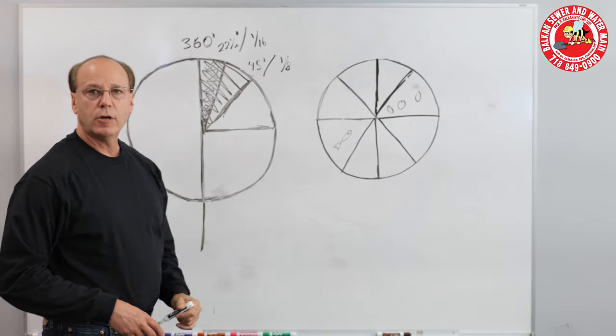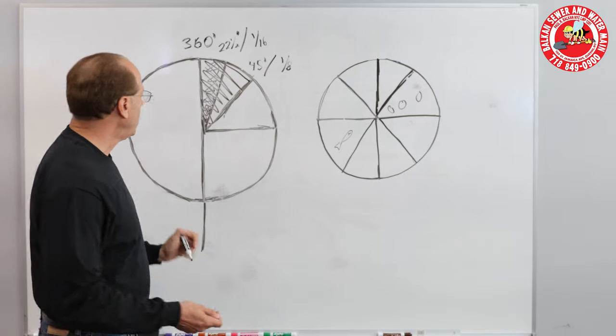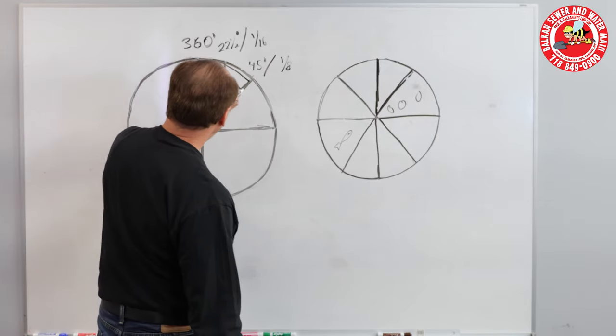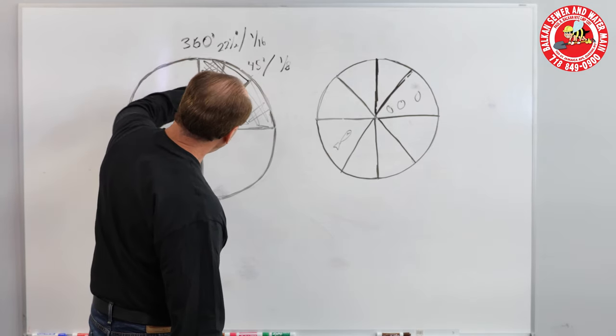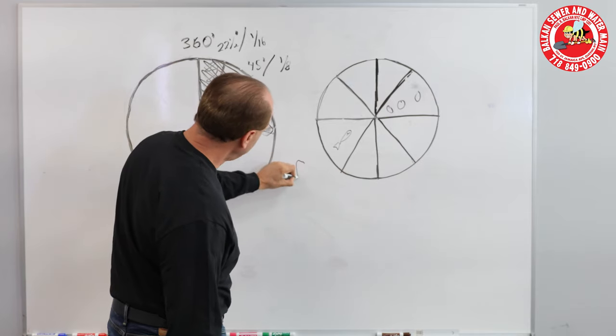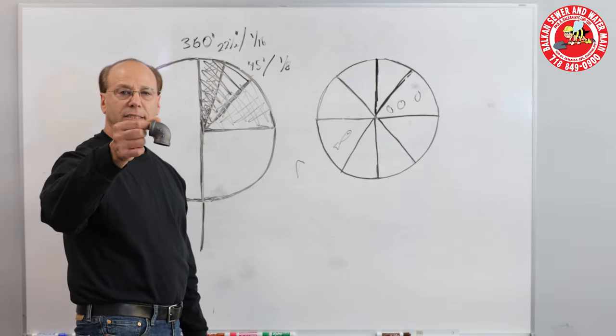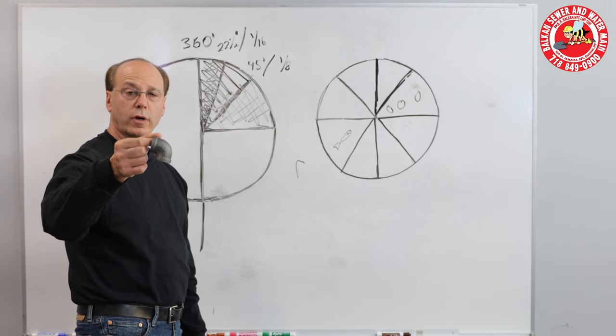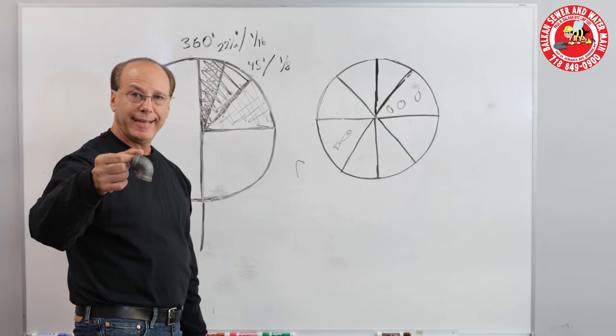Now the fitting that most folks are familiar with is called an elbow. An elbow is a full quarter of a circle. That's your elbow. That's what you're used to seeing, something like this. Now that's a 90-degree bend. 90 degrees is one-quarter of a circle, and it's also known as a quarter bend.